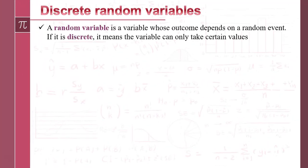A random variable is just a variable whose outcome depends on a random event. Now, a discrete value can only take certain types of value. For example, if I was counting the number of cows in a field, I can have 23 cows or 24 cows, but I can't have 23 and a half cows. Hopefully you get the gist with what I'm saying about discrete.